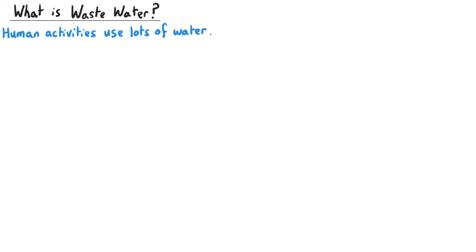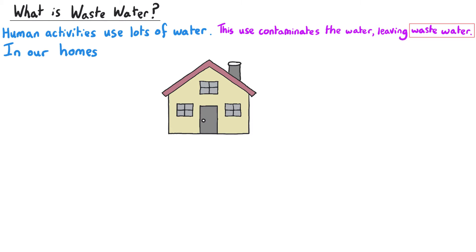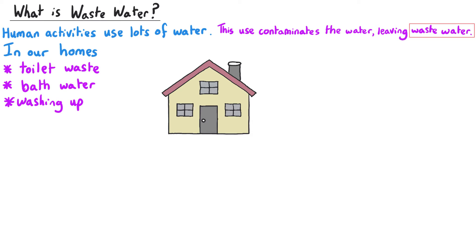Human activities use lots of water, and once these activities have been carried out, the water that we were using is considered to be wastewater. Wastewater comes from all sorts of different places. In our homes we have toilet waste, bath water, and washing up water.